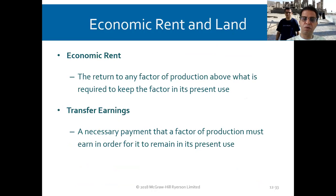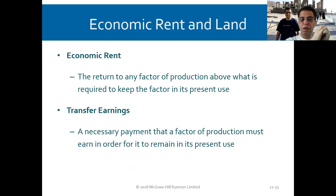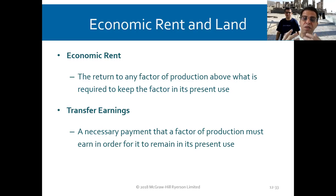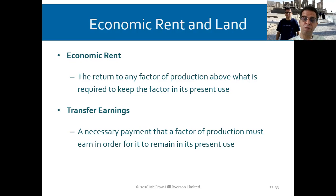Economic rent is the return to any factor of production above what is required to keep the factor in its present use. Transfer earnings is the necessary payment that a factor of production must earn in order to remain in its present use. For example, if the benefit from keeping a car is $1,000 but renting it earns $1,500, the economic rent is the surplus above the transfer earnings needed to retain it.